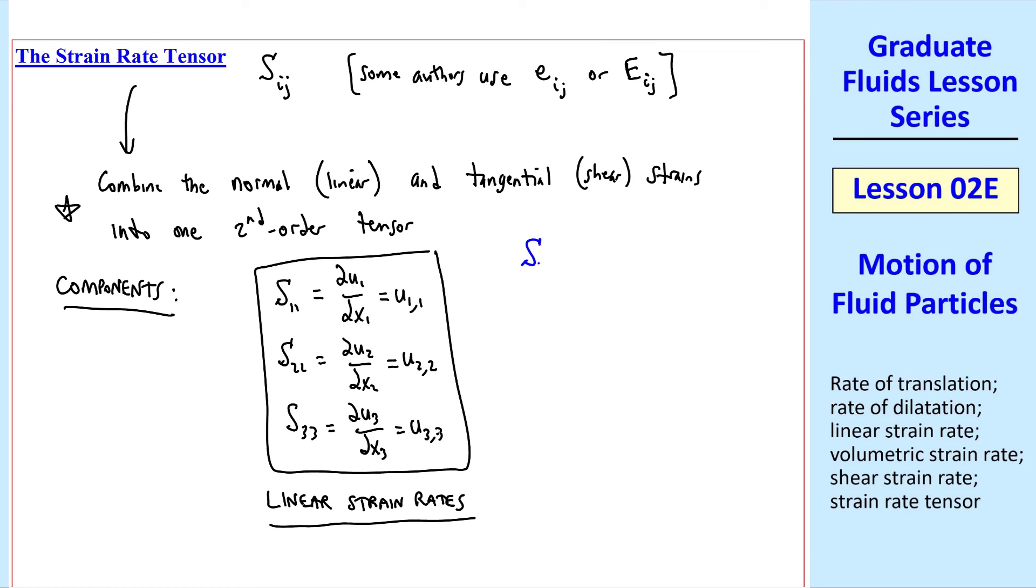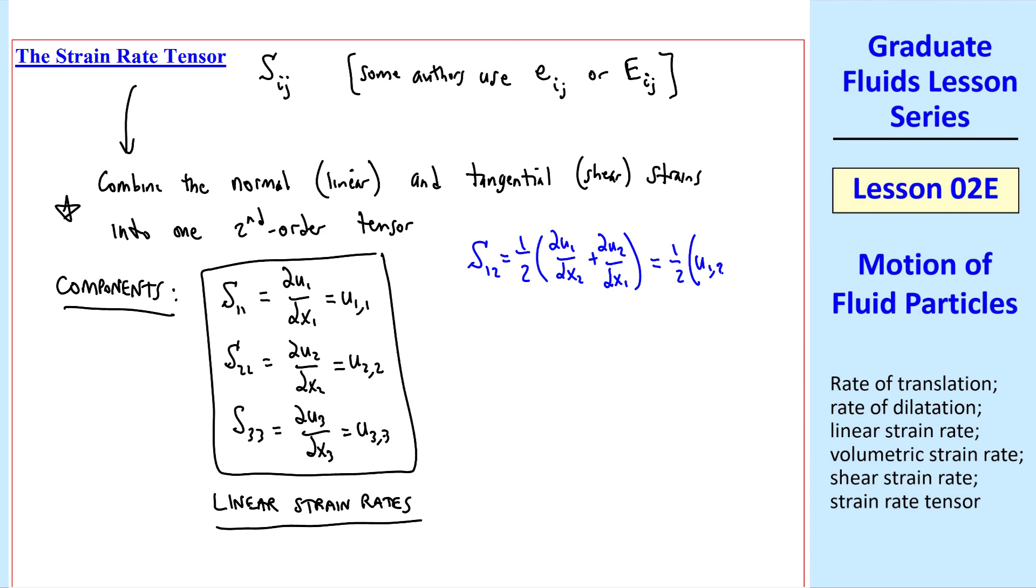The shear strain rates are defined as S12 equal one-half del u1 del x2 plus del u2 del x1, or in common notation, which is preferred here because it's easier to write, we have one-half u1 comma 2 plus u2 comma 1.